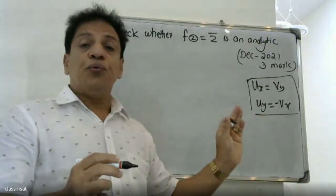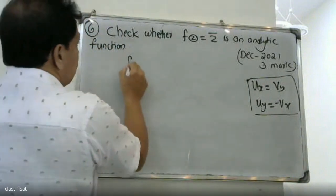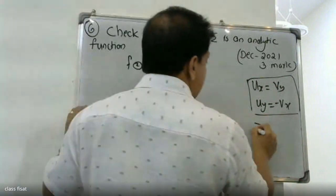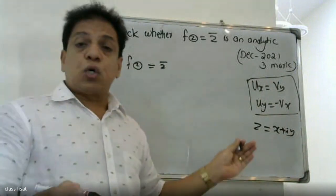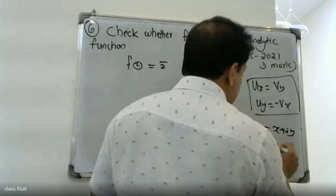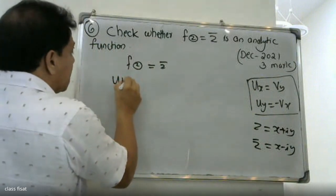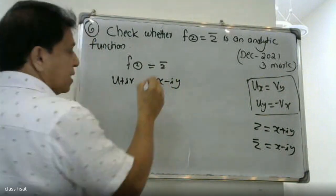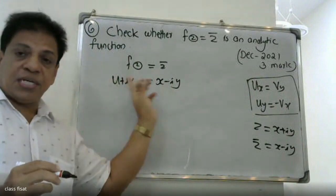The real part: f of z is equal to z bar. z is equal to x plus iy, and then z bar is equal to x minus iy. So z bar equals x minus iy.